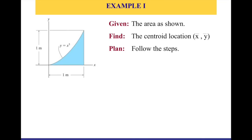Let's put this into practice with an example. We are given a schematic with a shaded area in a two-dimensional x-y system. The curve representing the area is y equals x cubed, and we are limiting the area on the x-axis from 0 to 1, and on the y-axis from 0 to 1 as well. We want to find the centroid location — x̄ and ȳ — for the area shown, following the steps we've outlined.